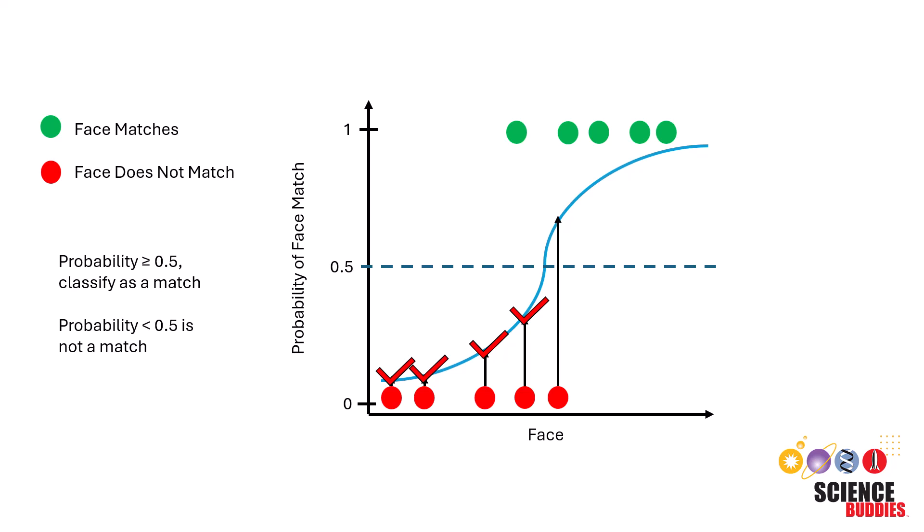We will go up, then to the left, and since this point is actually above our threshold of 0.5, the model will actually identify this face as a match, even though it is not. This may happen if a face is similar to the one in the system, but it is actually not a match.